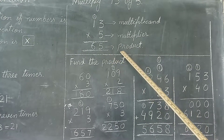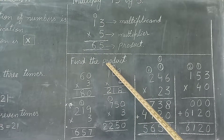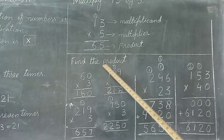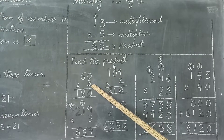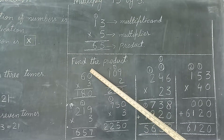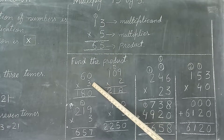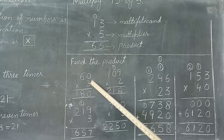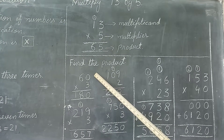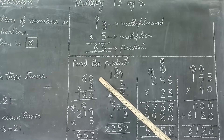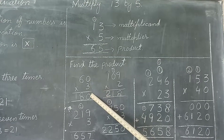In the next question we will use the word 'Find the Product' — this means that you will find the answer. Example: 60 multiplied by 3. Students remember that any number multiplied by 0 — the answer will be 0. So 3 zeros are 0.